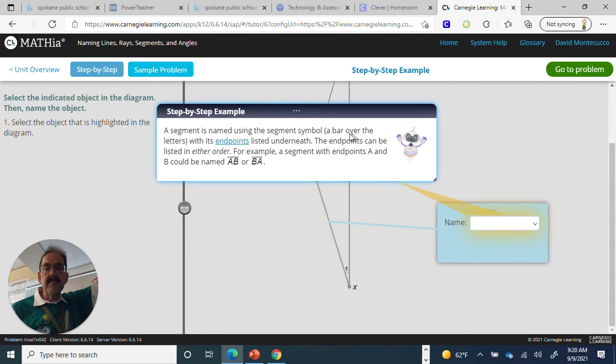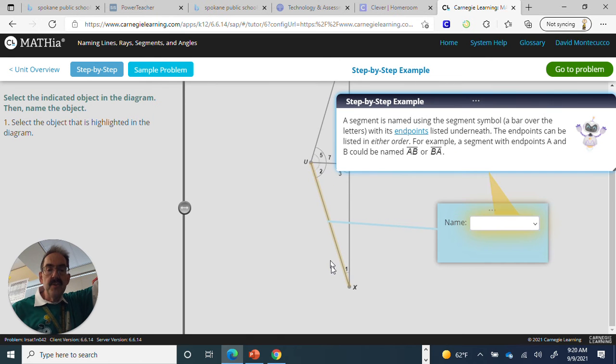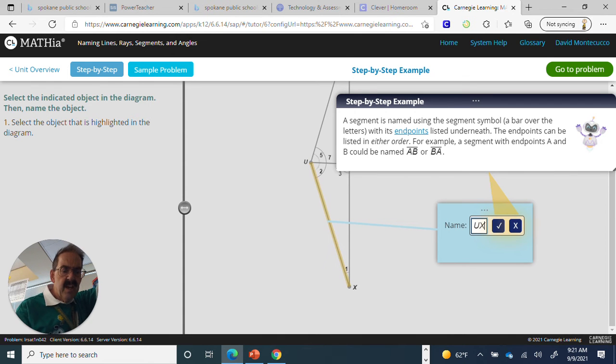And there it is. The segment is named with a bar over the segment. So in this case, UX. We're going to click on the bar only, no arrows, because it's a segment. In my opinion, always hit your cap lock button, and we're going to go UX. Hit enter, and it'll check it for you.